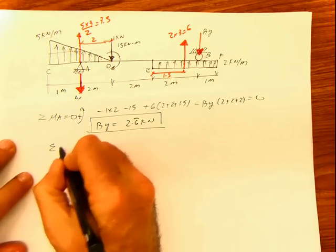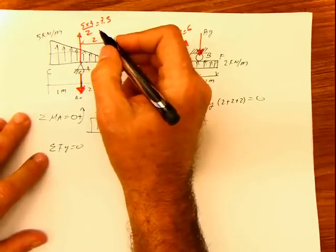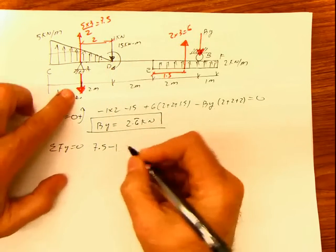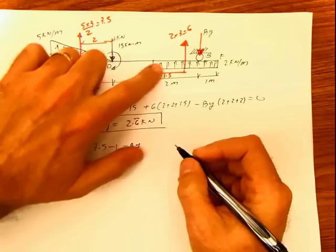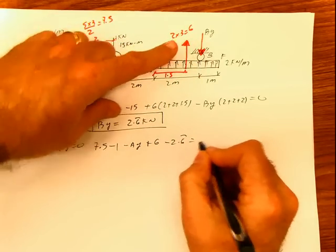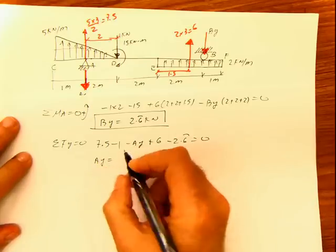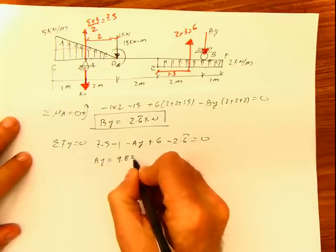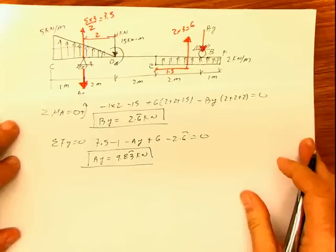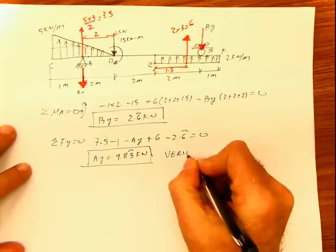Then we do summation of forces in y equals 0, now including all forces. We have 7.5 minus 1 minus Ay plus 6 minus 2.6 periodic equals 0. Solving for Ay gives Ay equals 9.83 with the 3 periodic kilonewtons. Immediately, what should we do? Verify the reactions.